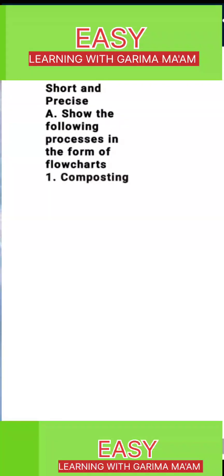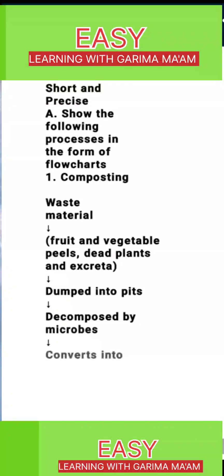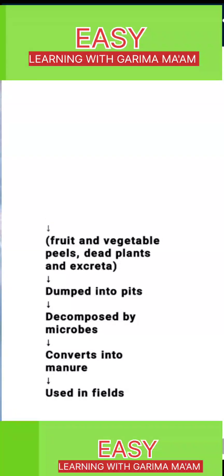A. Show the following processes in the form of flowcharts. 1. Composting: Waste material → Fruit and vegetable peels, dead plants and excreta → Dumped into pits → Decomposed by microbes → Converts into manure → Used in fields.